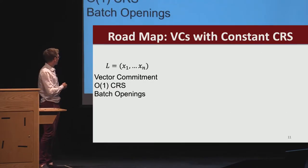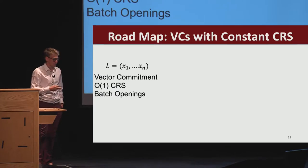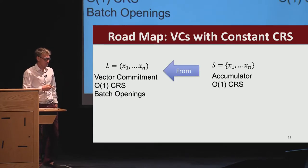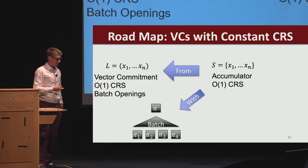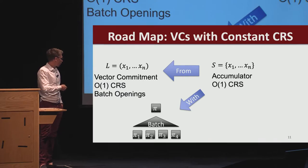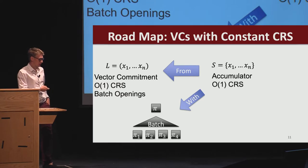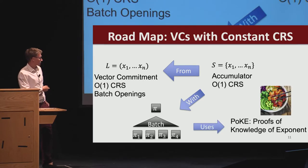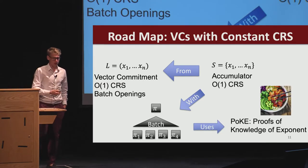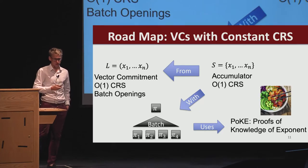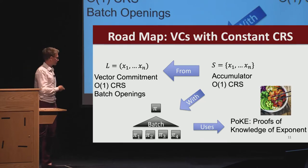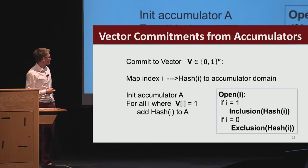For the rest of the talk, I will focus on how we achieve the constant size CRS property. As a roadmap, we're going to build a vector commitment with all of these nice properties—constant size CRS—from an accumulator which already has the constant size CRS property. If the accumulator also has batch openings, then we can get batch openings for the vector commitment as well. In order to build these batch openings, we need PoKE—proofs of knowledge of exponent, or succinct arguments of discrete logarithms in groups of unknown order.